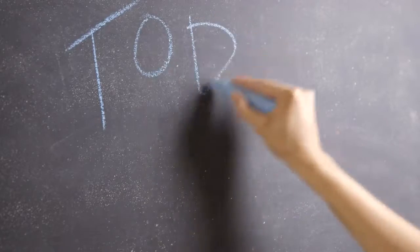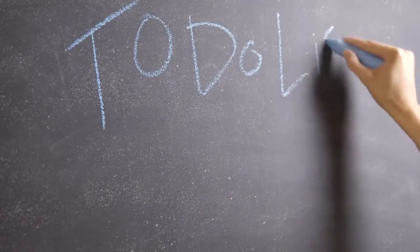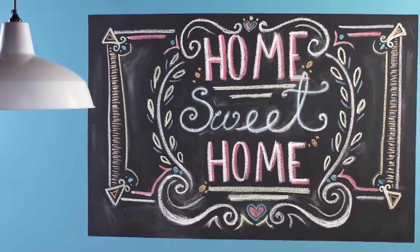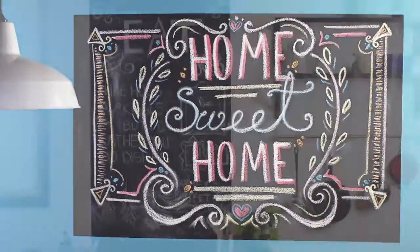Before writing for the first time, condition the chalkboard by rubbing the side of a piece of chalk over the entire surface and then erasing. It's that simple. Now you're ready to enjoy your new writable erasable chalkboard creation. If you choose to clean with a wet cloth, wait at least seven days after painting.